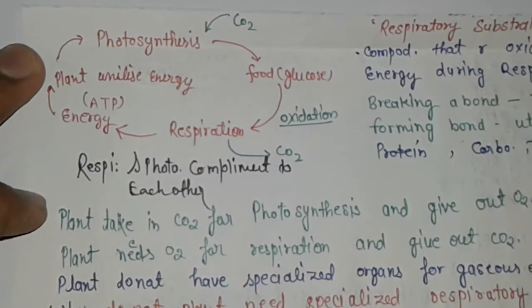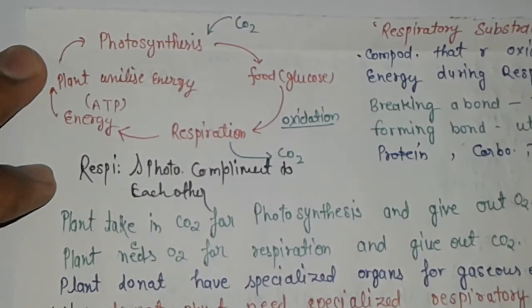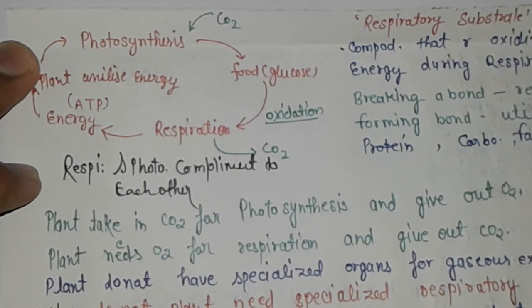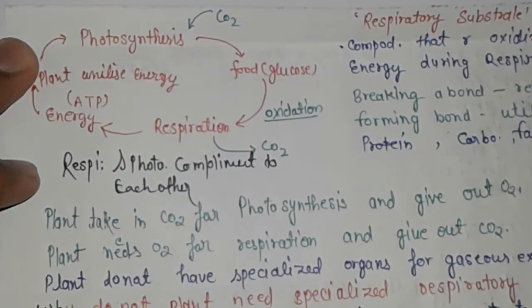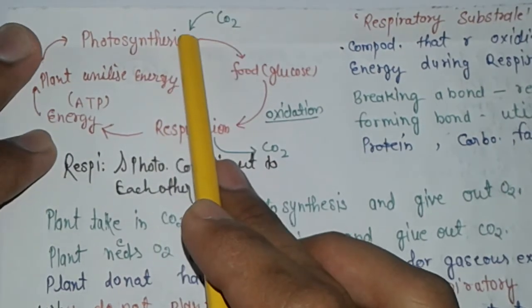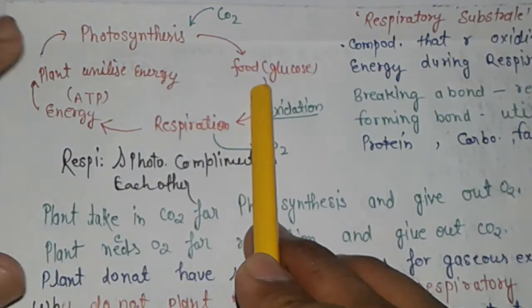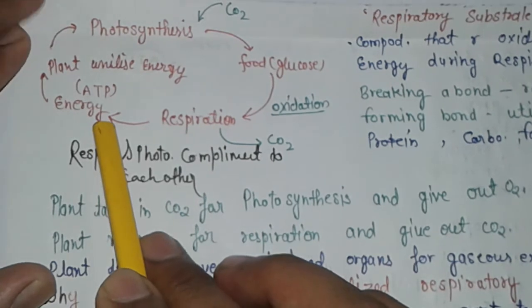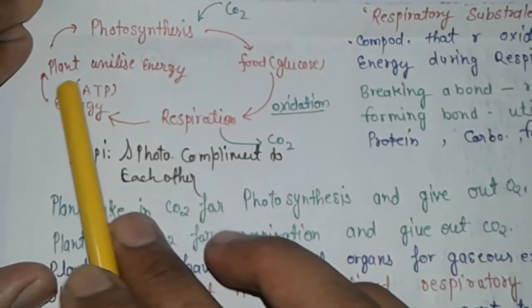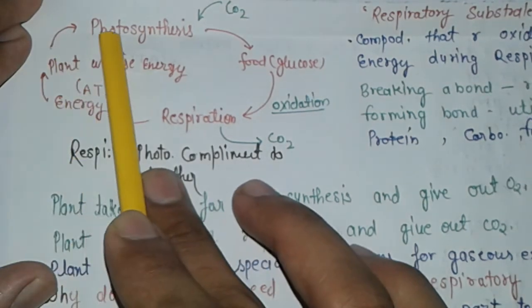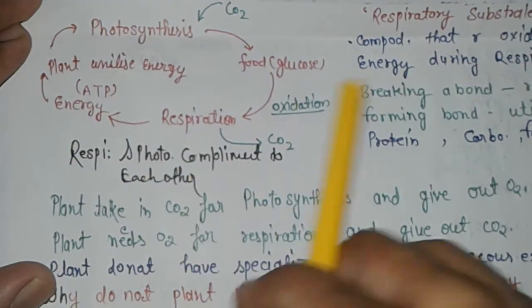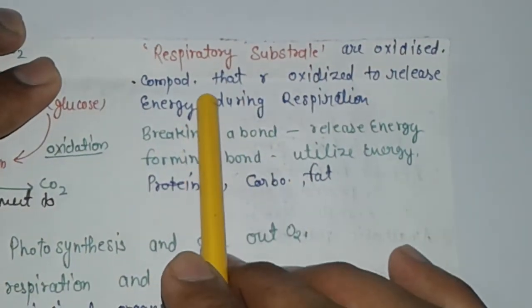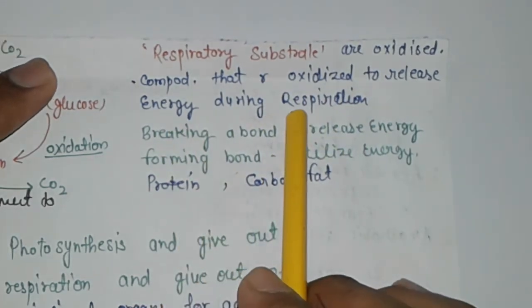Further we will discuss how respiration and photosynthesis complement each other. First, photosynthesis in plants utilizes carbon dioxide and forms food that is glucose. This is broken down through oxidation of glucose. This process is respiration and releases energy in the form of ATP. This energy is utilized by plants to further perform photosynthesis. This way we can say that respiration and photosynthesis are complementary to each other. Respiration substrates are the compounds that are oxidized to release energy during respiration.